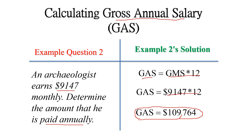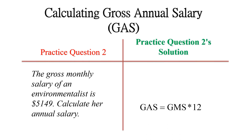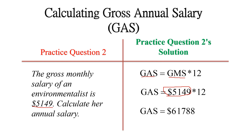Here is a practice question — please pause the video and attempt it. The gross monthly salary of an environmentalist is $5,149; calculate her annual salary. GAS = GMS × 12, so $5,149 × 12 = $61,788. That is the gross annual salary for the environmentalist. If you got that, well done.